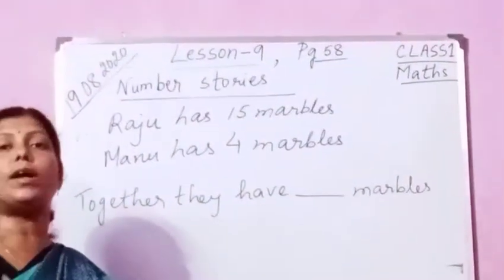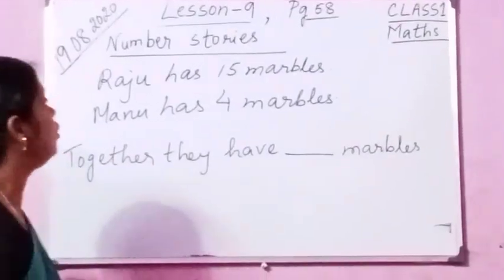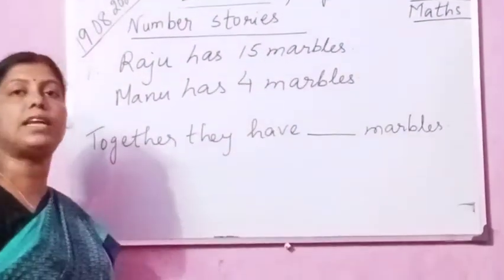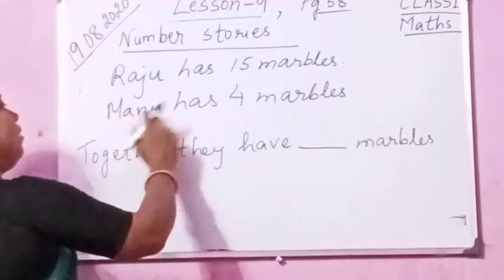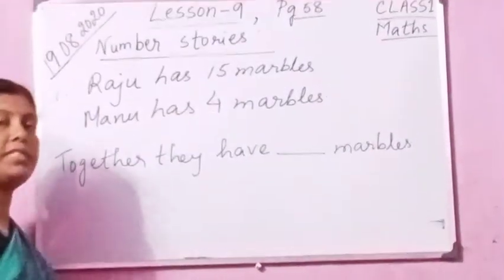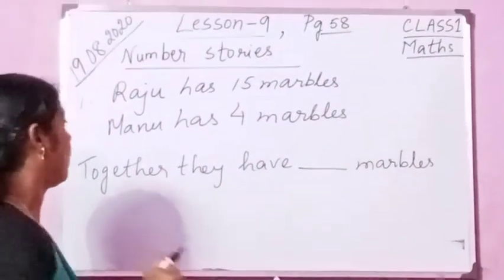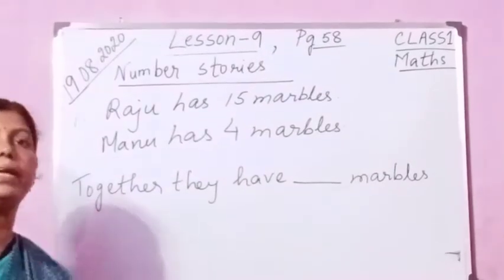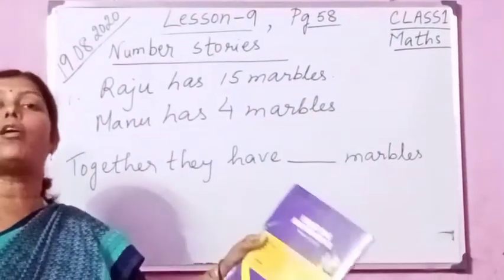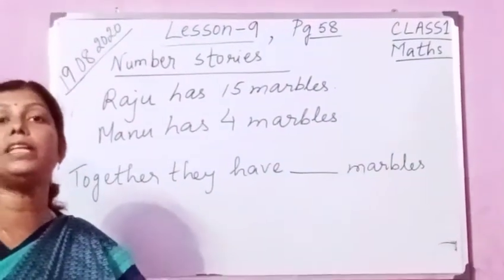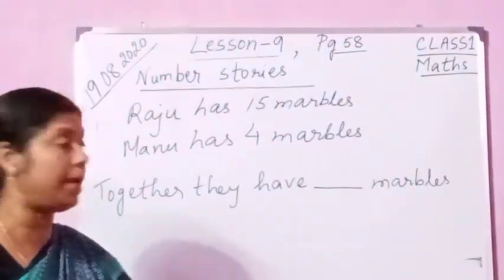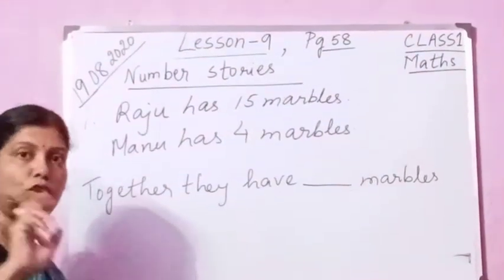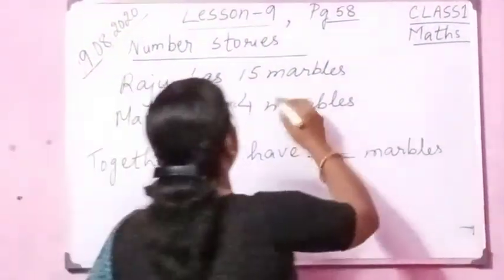How are you going to understand? Raju has 15 marbles. Manu has 4 marbles. When the word 'together' is there, it means both of them. Together means both of them. Together they have dash marbles — that means we are going to add.